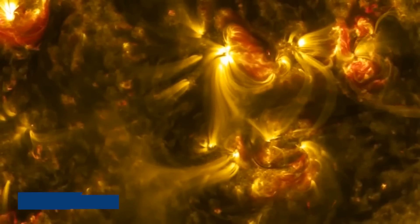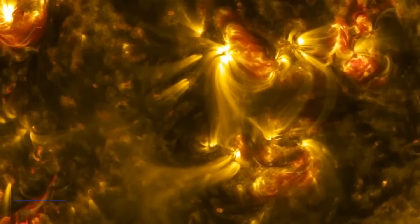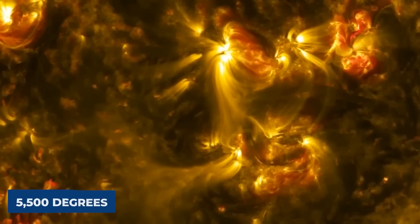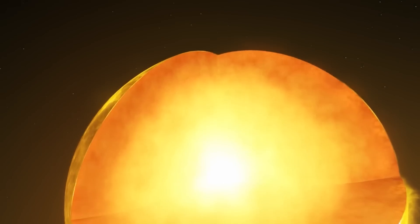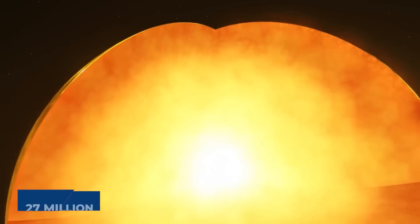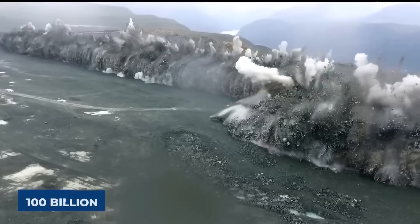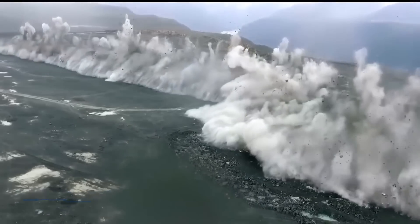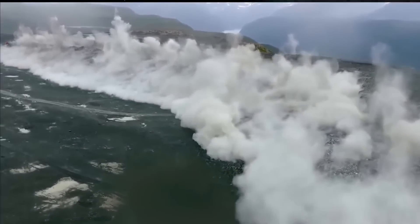The surface of the sun is about 10,000 degrees Fahrenheit or 5,500 degrees Celsius. But the core is far hotter, reaching more than 27 million degrees Fahrenheit or 15 million degrees Celsius. One would need to explode 100 billion tons of dynamite every second to match the energy produced by the sun.